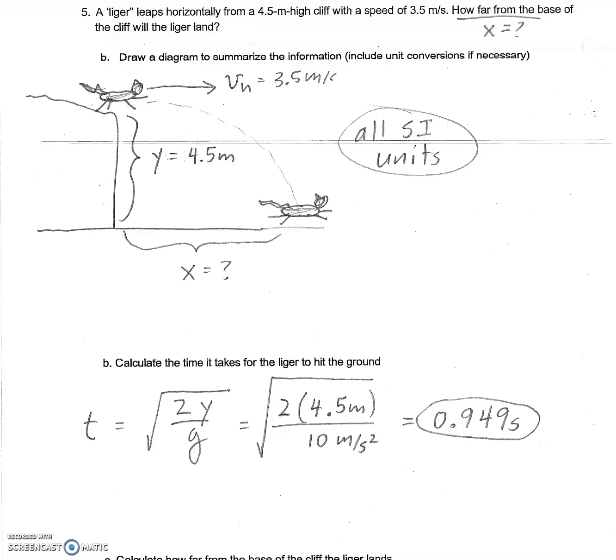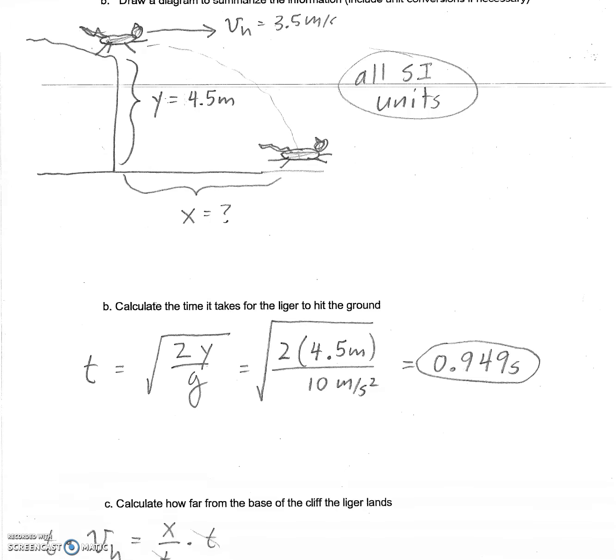Continuing with our problem, we can calculate our time by taking the square root of 2dv over g. We can plug in 4.5 meters for our dv or our y value. Multiply it by 2, divide it by 10, take the square root. It's going to take 0.949 seconds for our projectile to hit the ground.